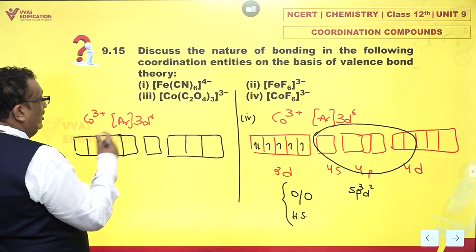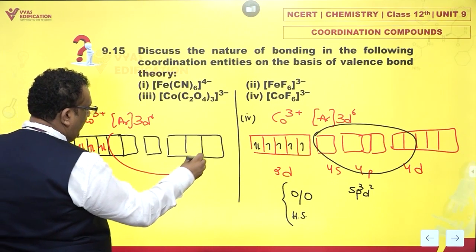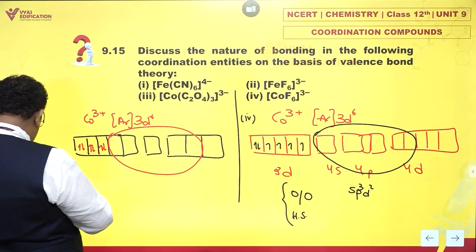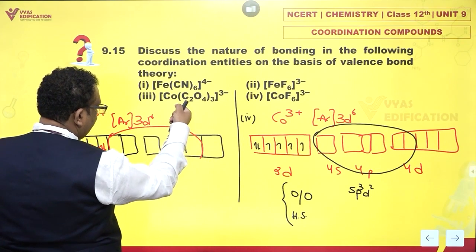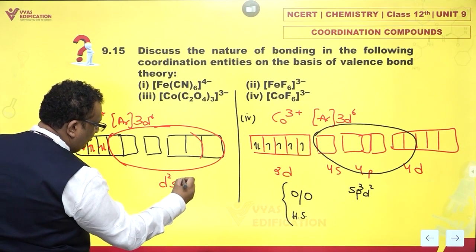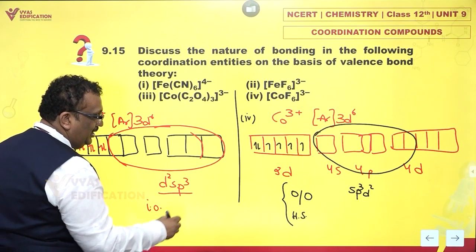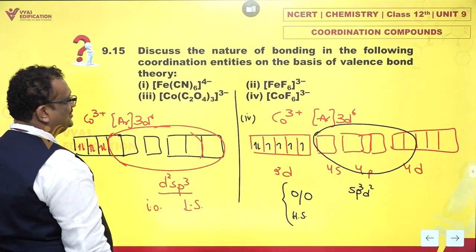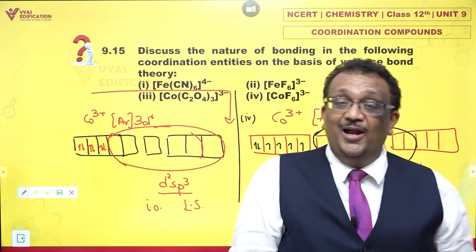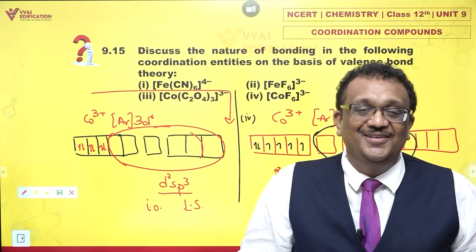Oxalate is not a very strong field ligand as such - oxygen donors are not that great - but it is a chelating bidentate ligand. Secondly, cobaltic is so keen to undergo pairing that it actually becomes a low spin complex. The d6 configuration pairs up, giving d2sp3 hybridization - this is inner orbital and a low spin complex. So one and three are inner orbital low spin complexes, and two and four are outer orbital high spin complexes.